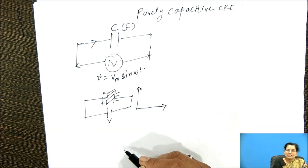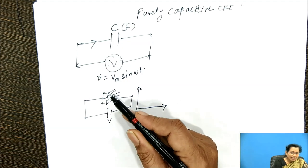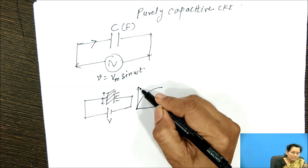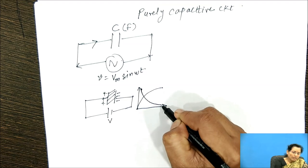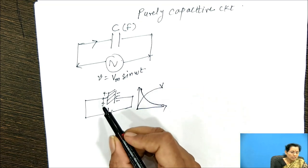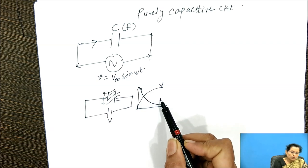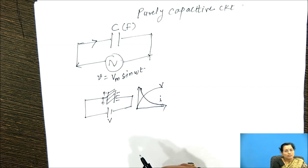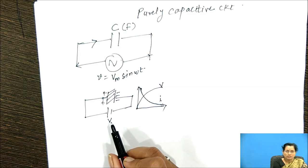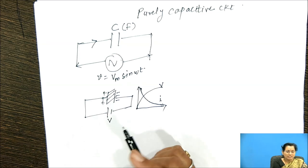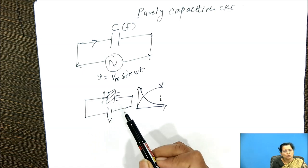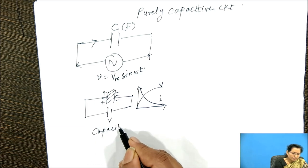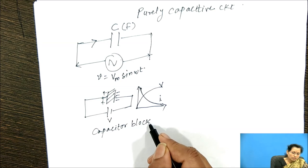We can draw the charging process: voltage across the capacitor develops gradually. At the start, maximum current flows, and when the full voltage develops across the capacitor, current stops. So in this capacitive circuit, DC is blocked — when the capacitor charges to this voltage, no current flows through the circuit. We can say this capacitor blocks DC.